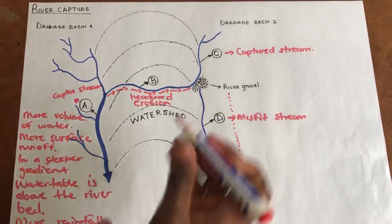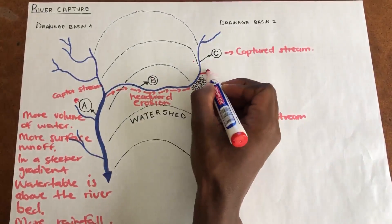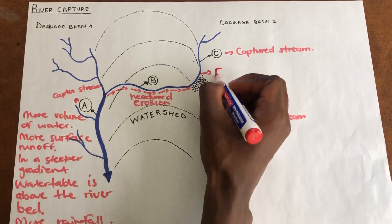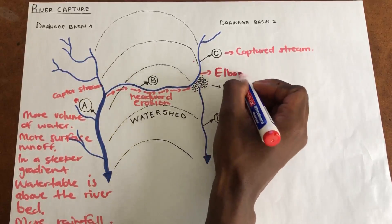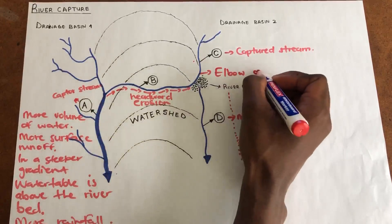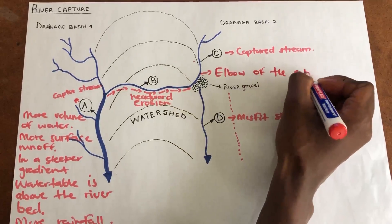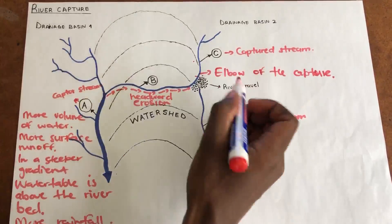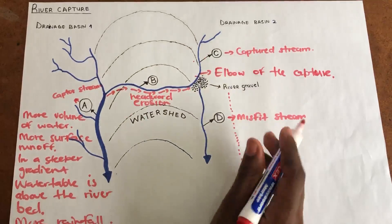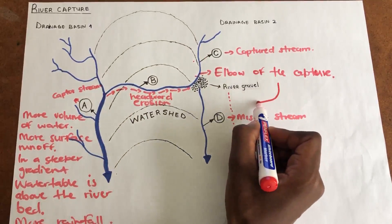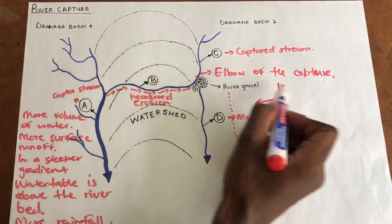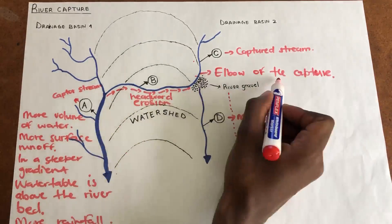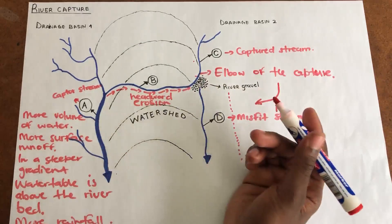One more concept I should have mentioned while explaining: this bend here — where the water changes direction — we call this the elbow of capture. It has a distinctive elbow or bent shape. The water flows this way into stream A, and alongside it you have the river gravel deposit and the misfit stream. This bend is called the elbow of capture.